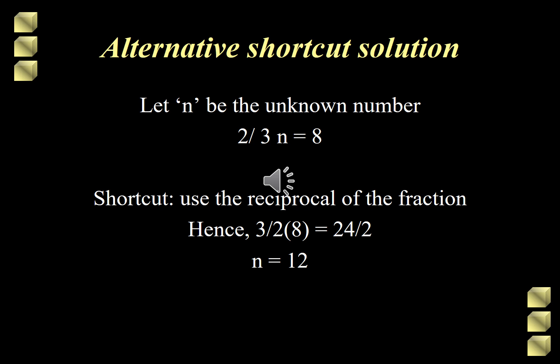Two-thirds of n is 8. And getting the reciprocal of two-thirds, that's 3 over 2, three halves. 3 over 2 times 8 is, 3 times 8 is 24 over 2, 24 divided by 2 is 12. Hence our number is 12.